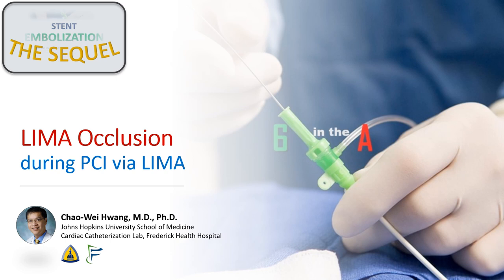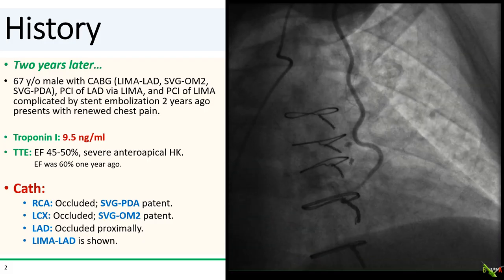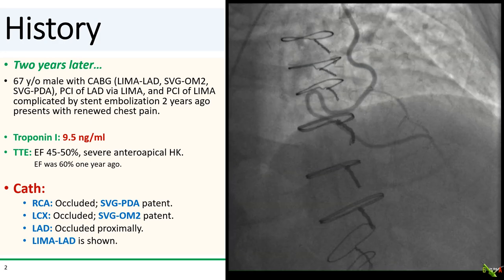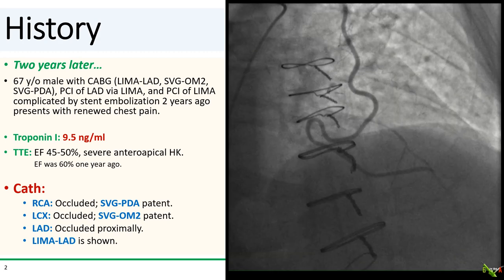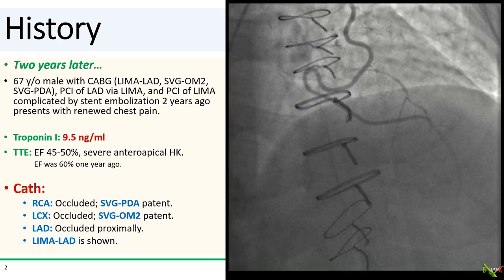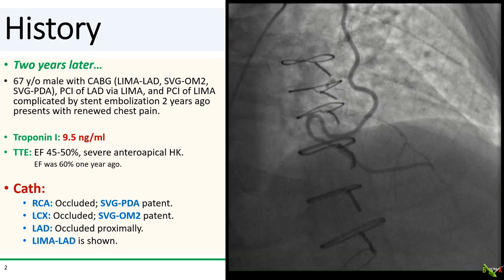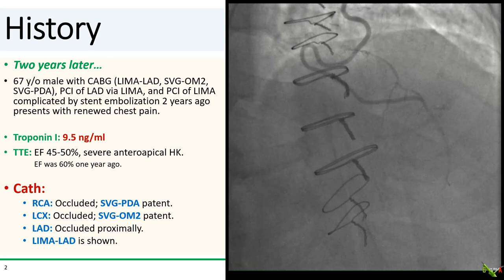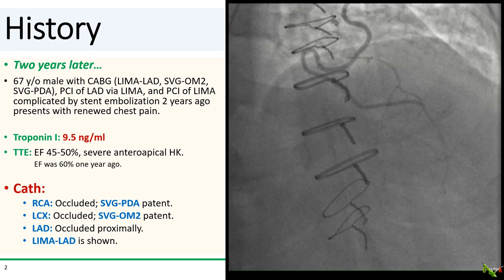It is now two years later, and this time, this unfortunate patient had an acute LIMA occlusion during PCI of the LAD via the LIMA graft. The patient is now 67 years old. As you may recall, he had three-vessel CABG followed by PCI of the LAD via the LIMA. Two years ago, he had PCI of the LIMA that was complicated by a stent embolization. He now presents with renewed chest pain, enrolled for a non-STEMI with a troponin of 9.5 nanograms per mL.